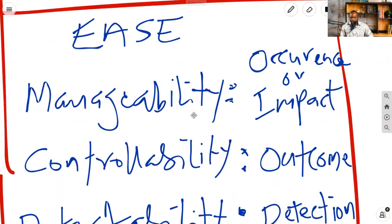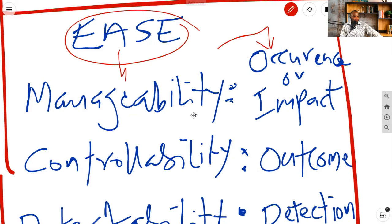Let's start with manageability. Manageability is all about ease and it is linked to the risk owner. Ease with which the risk owner can manage the occurrence or impact. So ease to manage occurrence or impact.